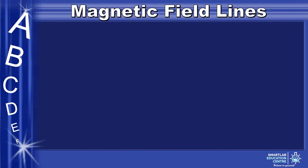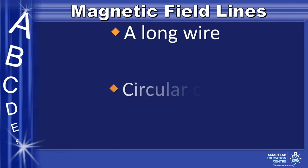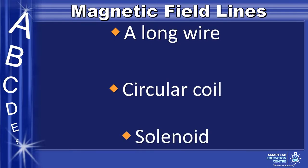In this chapter, we will discover the magnetic field of a long wire, a circular coil, and a solenoid.